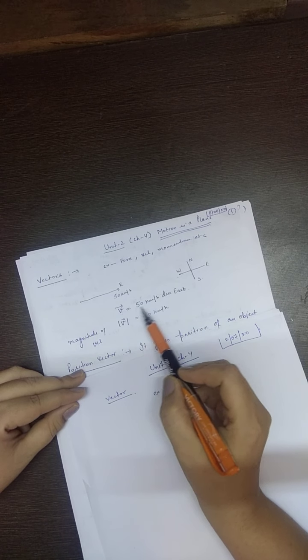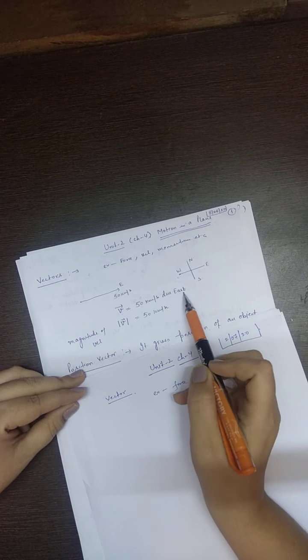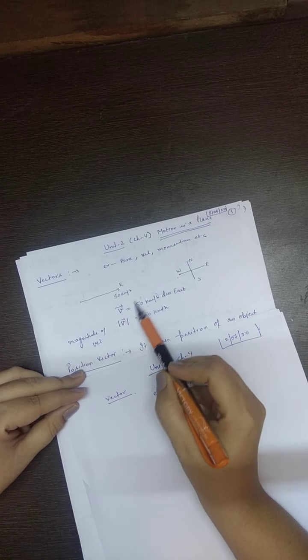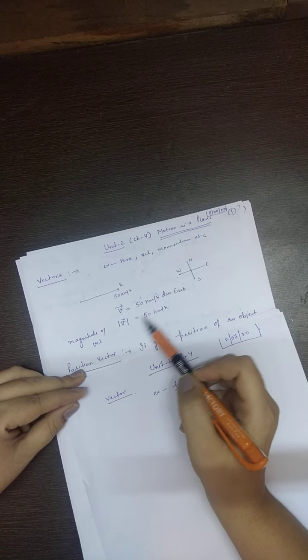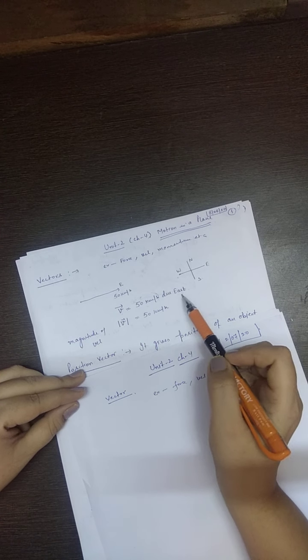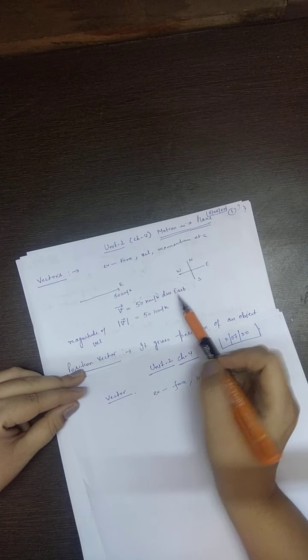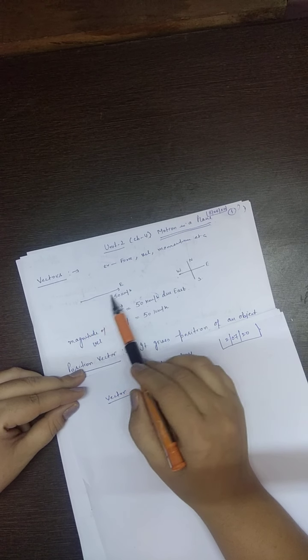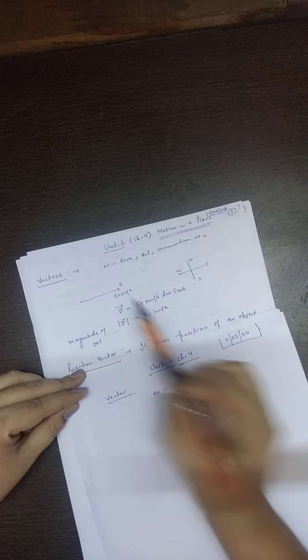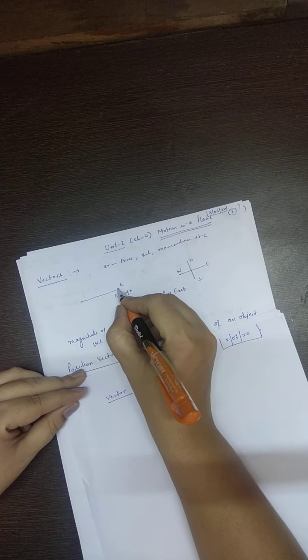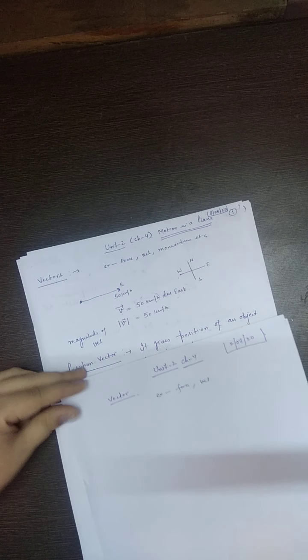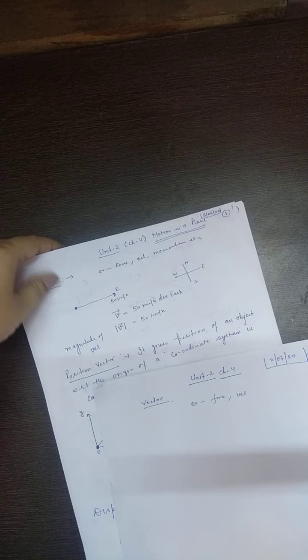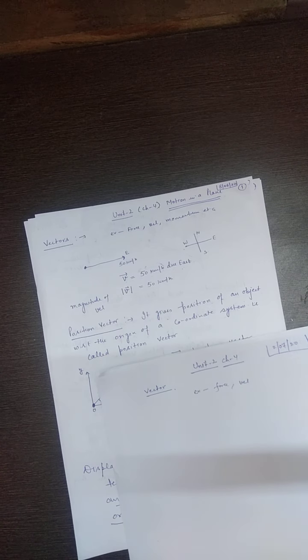If we say the velocity of a body is 50 km per hour due east — 50 km per hour is its magnitude and east is its direction. And how is a vector represented? It is represented by two things: one is its head and second is its tail. So before discussing different operations on vectors, I am telling you some types of vector.